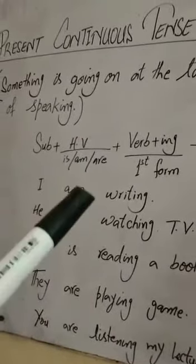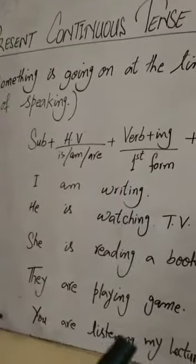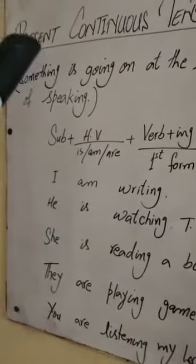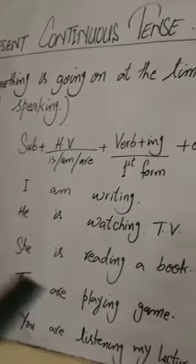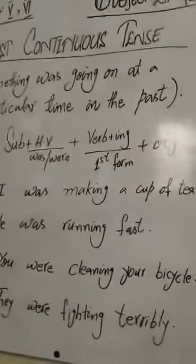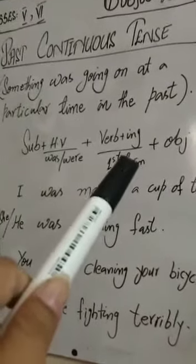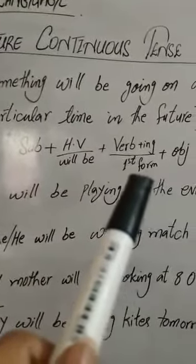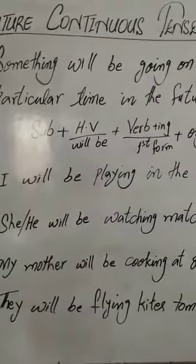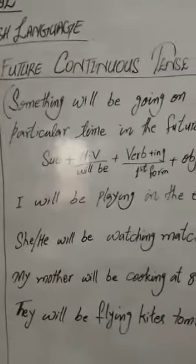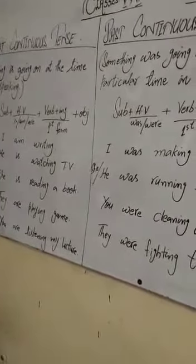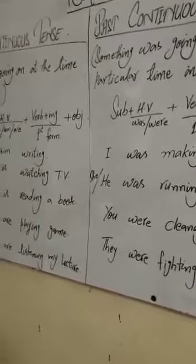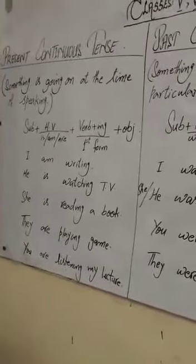اس کی پہچان کیا ہے؟ Verb کی first form کے ساتھ ING تو سب میں آ جاتا ہے، لیکن helping verb اس کی خاص پہچان ہوتی ہے present continuous tense کی۔ اب آپ یہاں پر دیکھیے past continuous tense — اس میں بھی verb کی first form کے ساتھ ING کا use کیا گیا ہے لیکن helping verb چینج ہے۔ Future میں بھی verb کی first form کے ساتھ ING کا use کیا گیا ہے لیکن helping verb change کیا گیا ہے۔ یعنی ان تینوں tenses میں ایک چیز common ہے کہ verb کی first form کے ساتھ ING کا use کیا گیا ہے، اور جو ان تینوں کو الگ الگ پہچان دیتا ہے وہ ہے helping verb۔